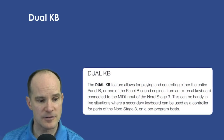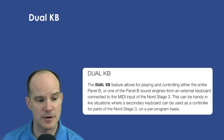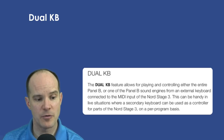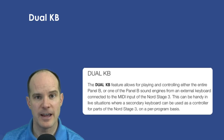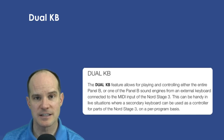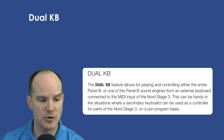The Dual KB feature allows for playing and controlling either the entire Panel B or one of the Panel B sound engines from an external keyboard connected to the MIDI input of the Nord Stage 3. This can be handy in live situations where a secondary keyboard can be used as a controller for parts of the Nord Stage 3 on a per-program basis. That per-program basis is one of the biggest advantages of using Dual KB versus traditional MIDI, because you can change the settings program by program.